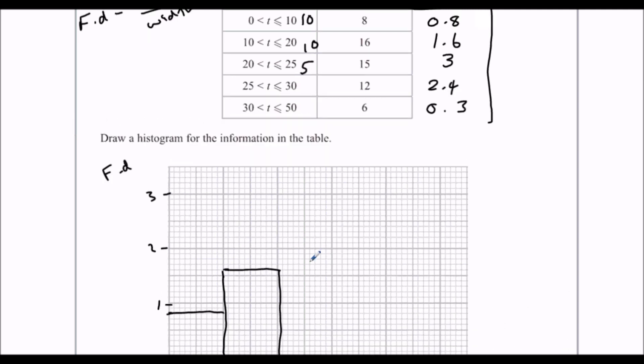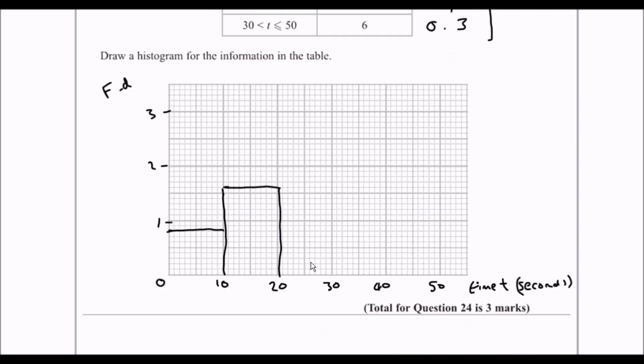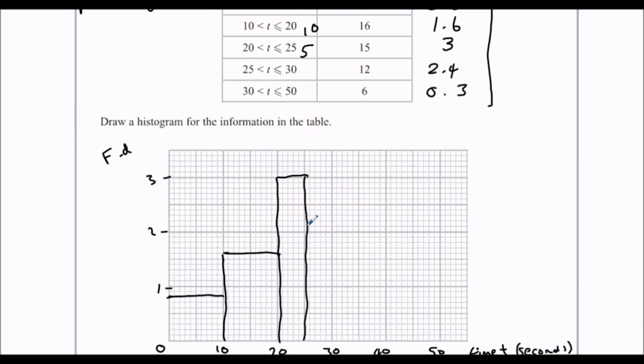Third bar, 20 to 25. And it goes up to 3. So 20 to 25 goes up to 3. Again, definitely use a ruler for this.